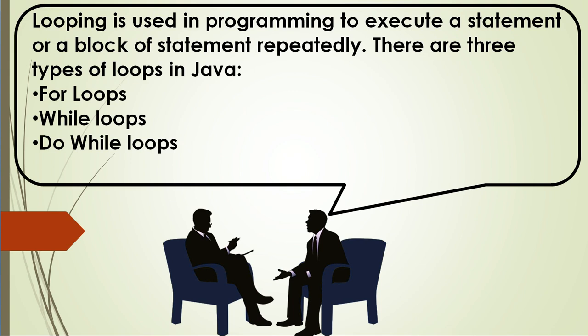There are three types of loops in Java: for loops, while loops, and do-while loops.